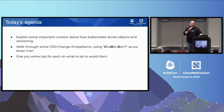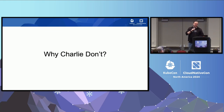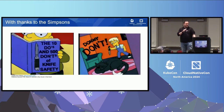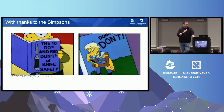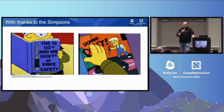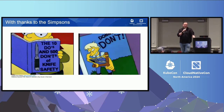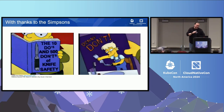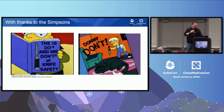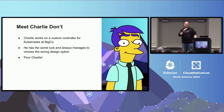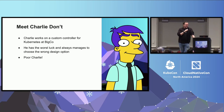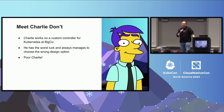Why did I come up with this stupidly complicated name for my talk? In The Simpsons, there's an episode where Bart gets a knife, and it has the ten do's and 500 don'ts of knife safety. That book has a section called 'Don't Do What Donny Don't Does.' I have lifted that wholesale — thanks to The Simpsons. So with that in mind, this is Charlie Don't. Charlie is unlucky enough to work on a custom controller for Kubernetes at BigCo, and he always makes the worst possible design decision. We all want to be not like Charlie.